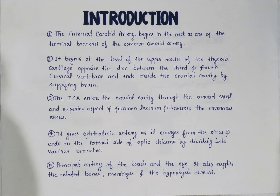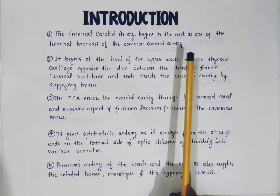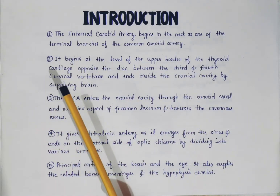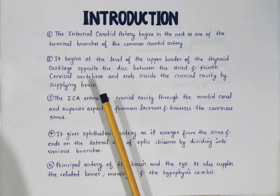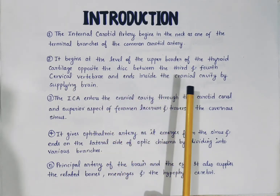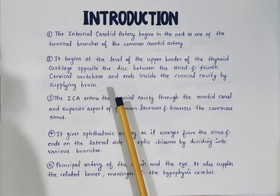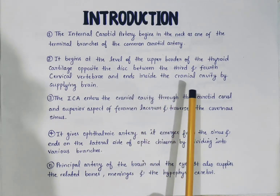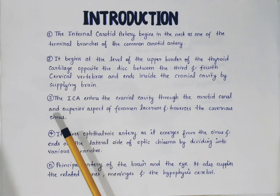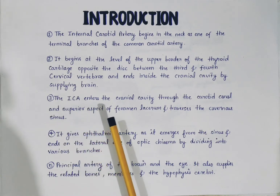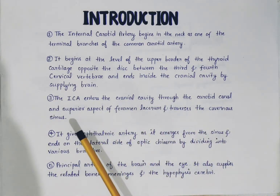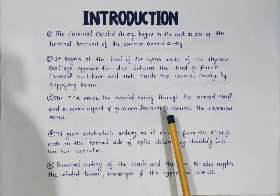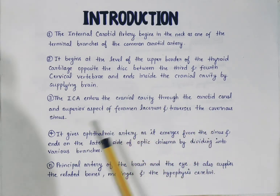The internal carotid artery begins in the neck as one of the terminal branches of the common carotid artery. It begins at the level of the upper border of the thyroid cartilage, opposite the disc between the third and fourth cervical vertebrae, and ends inside the cranial cavity by supplying the brain. It enters the cranial cavity through the carotid canal and superior aspect of foramen lacerum, and traverses the cavernous sinus.